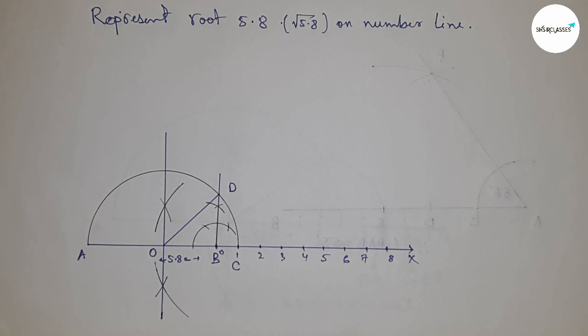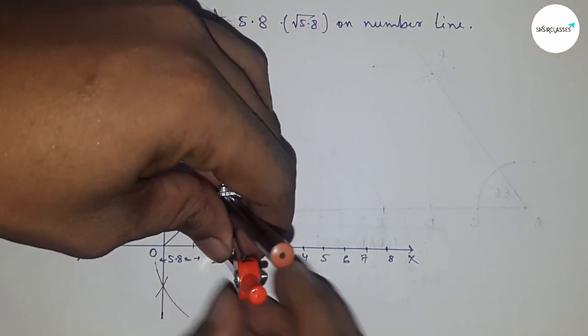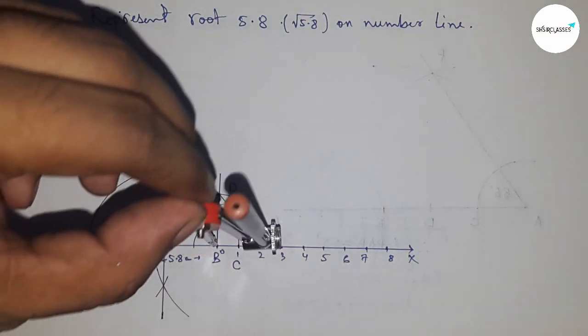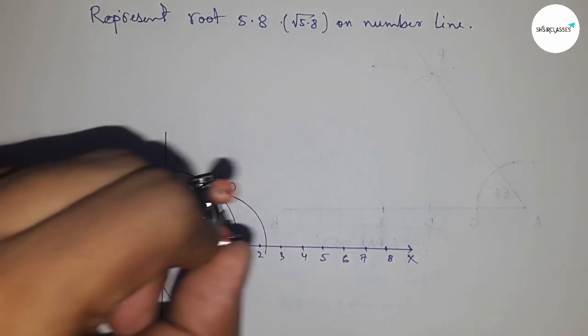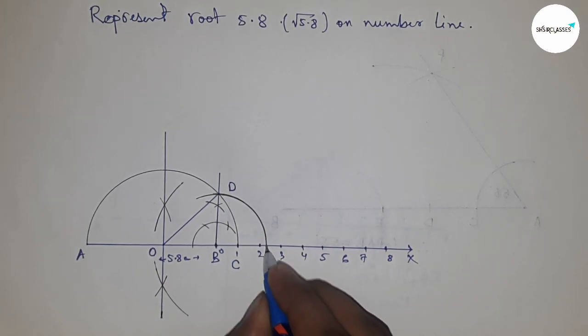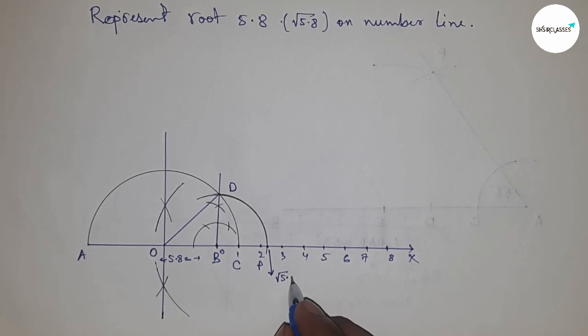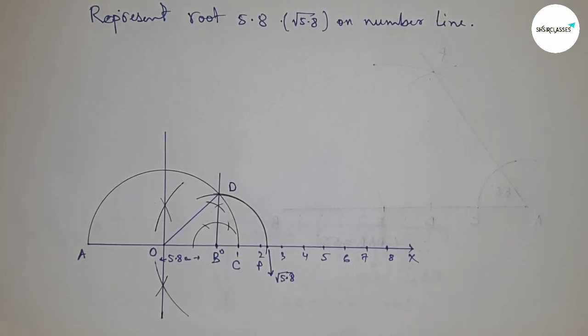Join O and D, which is the radius of the semicircle. Now take the length BD and draw an arc which cuts the number line at point P. This is the representation of root 5.8 on the number line.